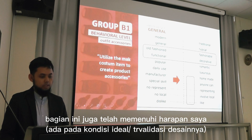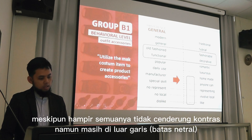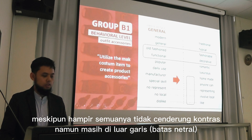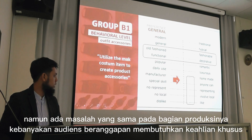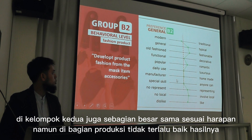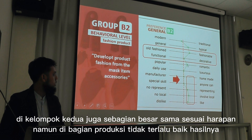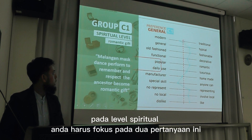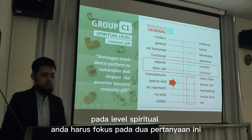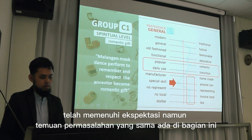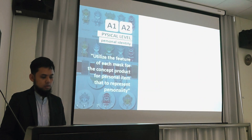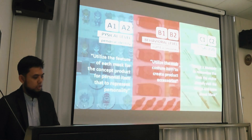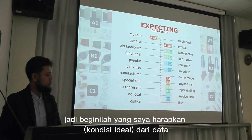In the behavioral level, we focus on these two questions and it already fulfills my expectation, even if it's almost at the boundary — but still out of the line, so it still represents my expectation. But the same problem appears: the manufacturer requirement and special skill. All respondents prefer that it needs a manufacturer and special skill. The other groups are also similar — they meet expectations but not strongly. About the spiritual level, we still focus on related questions — they already fulfill expectations — but the same problem appears there too.